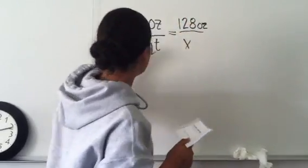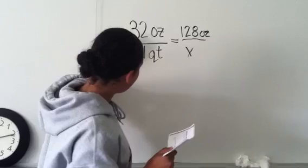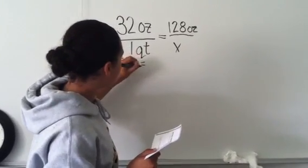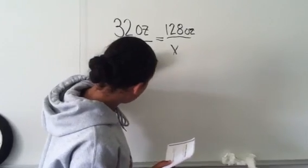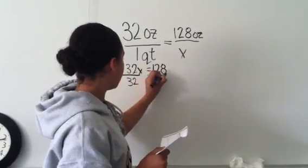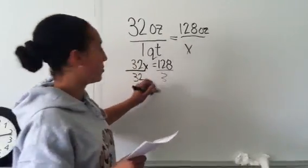And you cross multiply, so you get 32X equals 128, and you divide 32 on both sides because you want to isolate the variable.